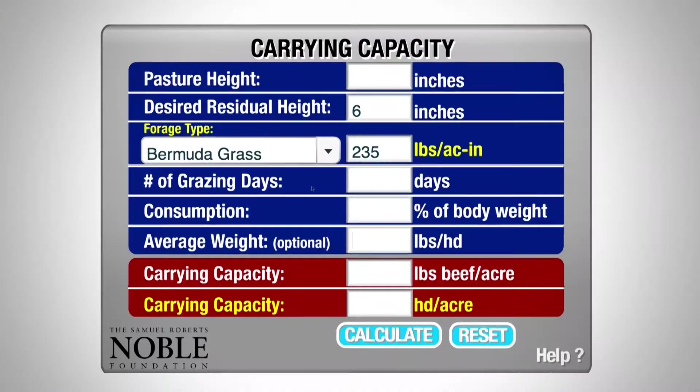Hello, I'm Hugh Algeo. Earlier Chuck talked about using the grazing stick in order to determine forage production. He referenced two calculators which we're going to look at next: the carrying capacity calculator and the reserve herd day calculator. The first one we want to look at is the carrying capacity calculator.